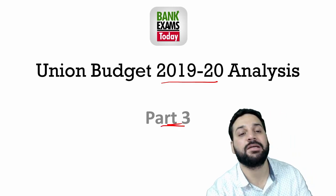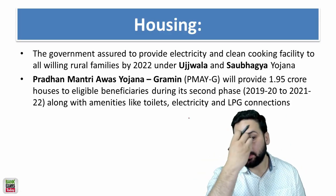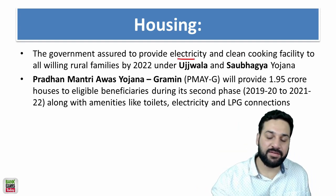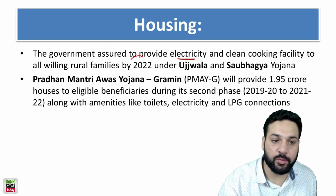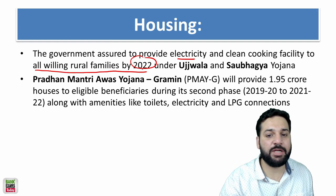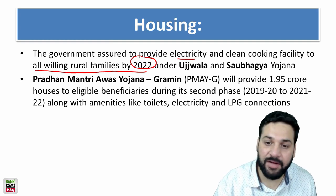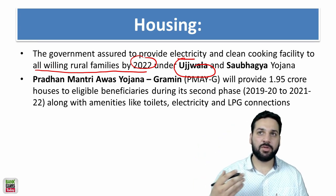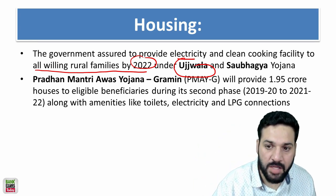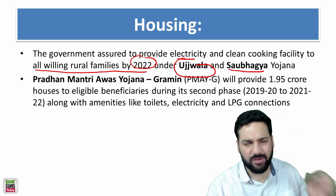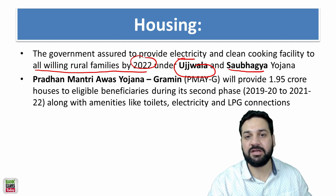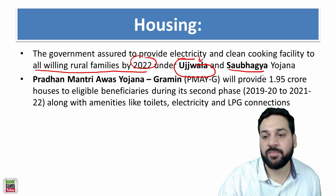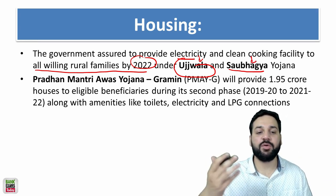Let's start with housing. The government assured to provide electricity and clean cooking facility by 2022 to all willing rural families. Under the Ujwala scheme, 50 million LPG connections have been provided to women below the BPL. The Subhagya Yojana, with tagline 'Har Ghar Bijali', provides electricity to all households.